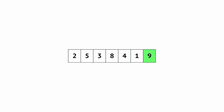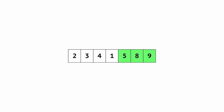In the first pass, 9 is moved to the right side of the array. In the second pass, 8 is moved to the right side in its proper position. In the third pass, 5 is moved to the right side in its proper position. Now 4 is moved to the sorted portion on the right side. Finally all the elements in this array are sorted as 1, 2, 3, 4, 5, 8, 9.